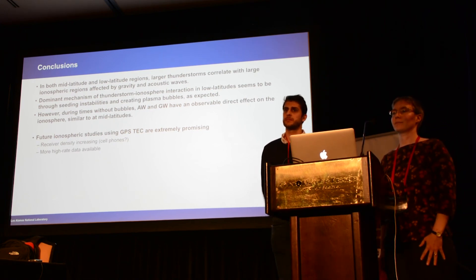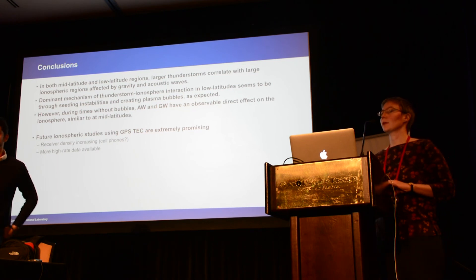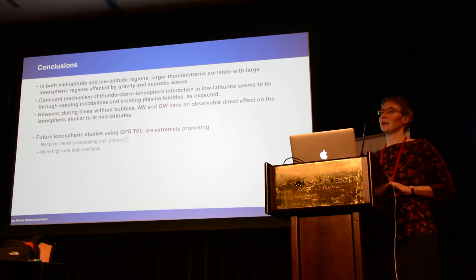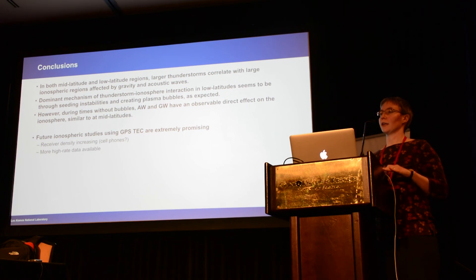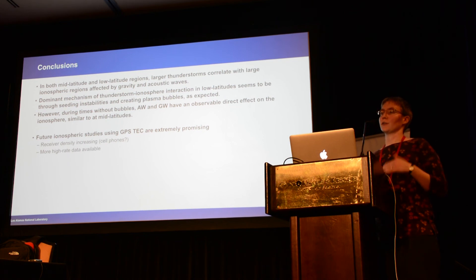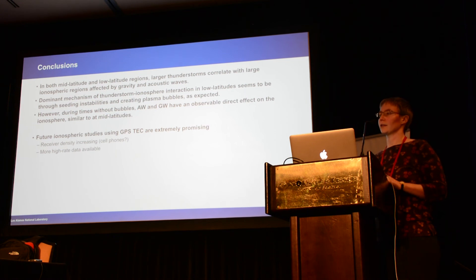Question: Do you see a difference in amplitude — or would you expect to see one — in the TEC perturbation signature based on the severity of the thunderstorm? Answer: We do look at amplitude variation and you can notice a difference. The problem is we're not probing the entire region all the time — we only have measurements in certain locations, so we're not always measuring the peak amplitude perturbation. Area coverage is a more sensitive measurement, but you can still see the signal in the amplitude.